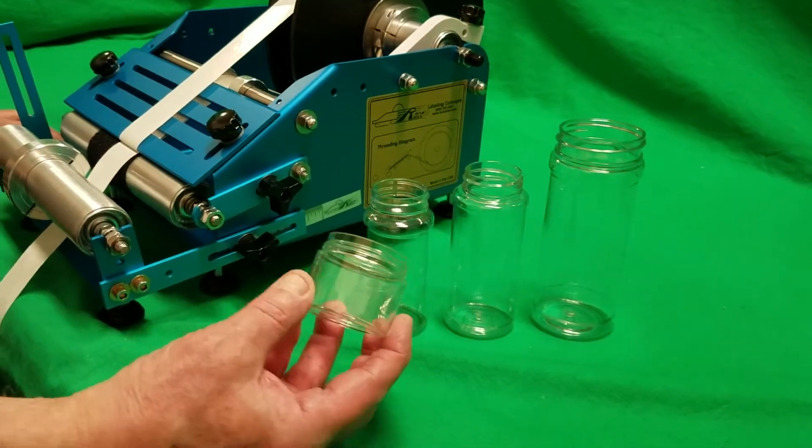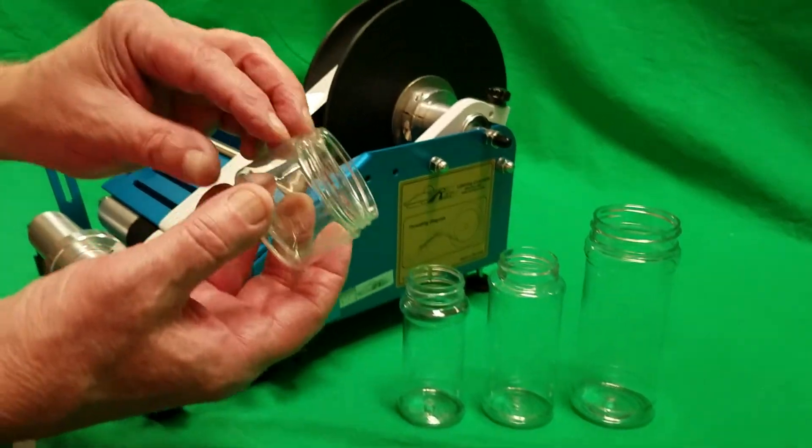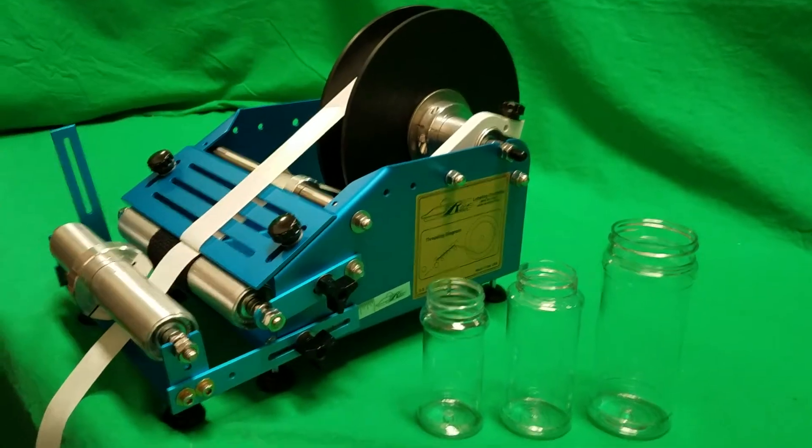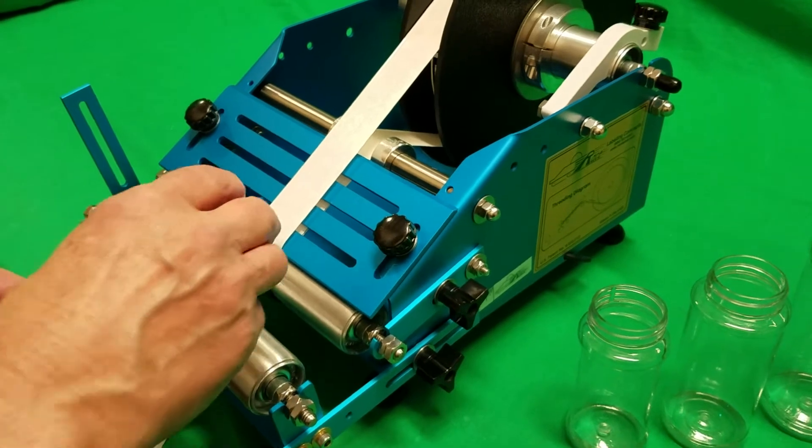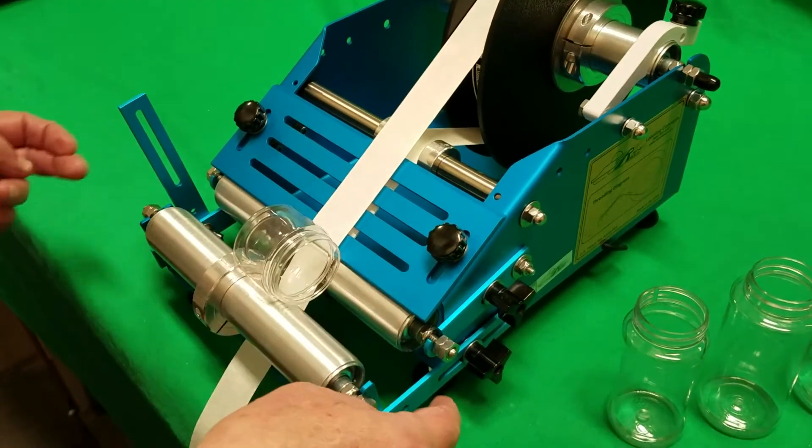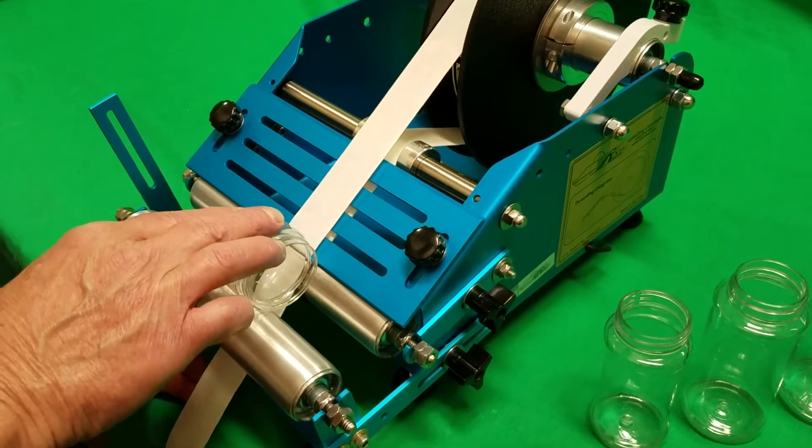What we're going to start with is the small one which is a jar that does not have the indented label panel. And this little jar is slightly tapered, so we have the machine offset to accommodate this taper.